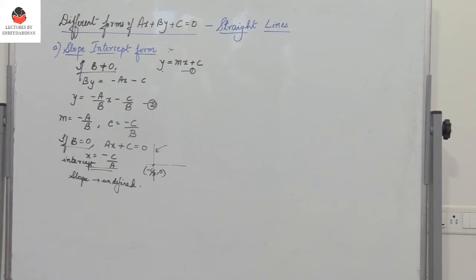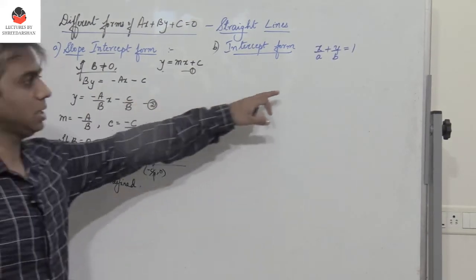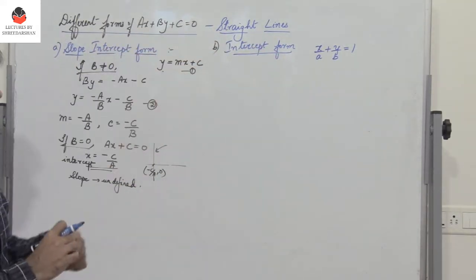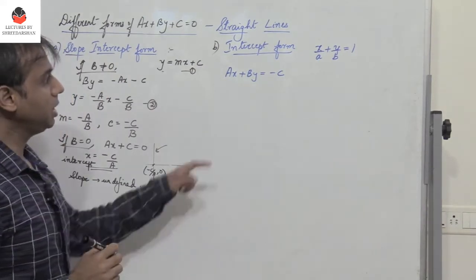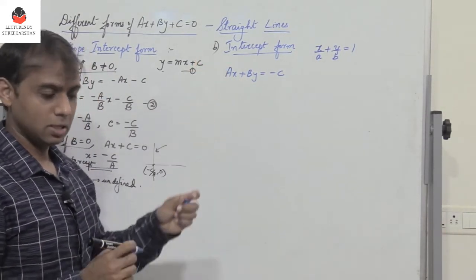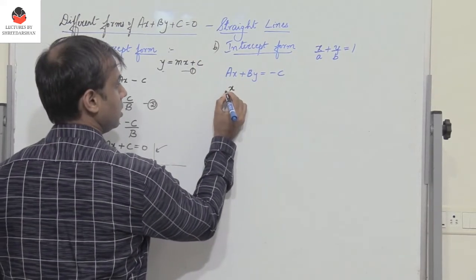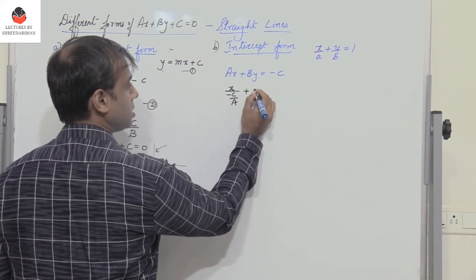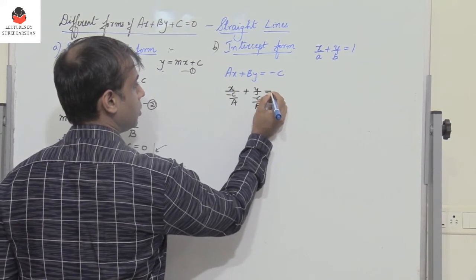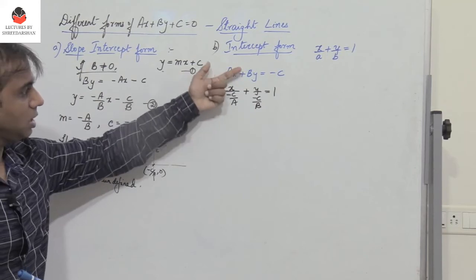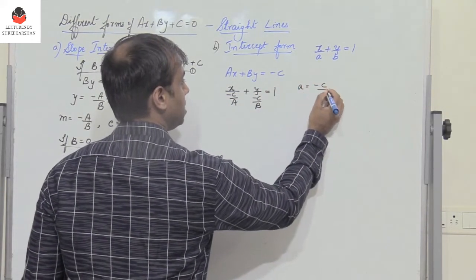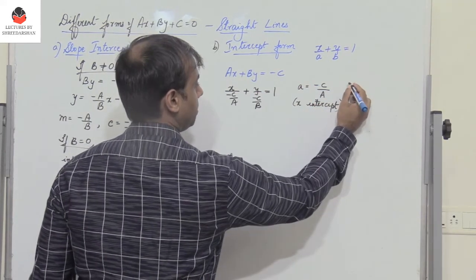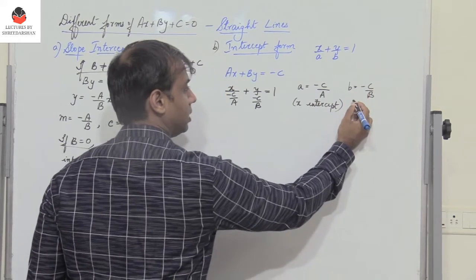Next, let us discuss the intercept form. The general intercept form is X by A plus Y by B equals 1. To express AX plus BY plus C equal to 0 in that form, we write AX plus BY equals minus C, then divide the whole equation by minus C, bringing A and B to the denominator. We get X divided by minus C by A plus Y divided by minus C by B equals 1. So the X intercept is minus C by A and the Y intercept is minus C by B.